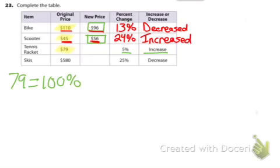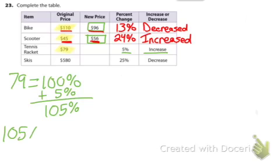We are increasing it by 5%, so our new percent is 105%. We want to know what is 105% of our original price, which is 79.